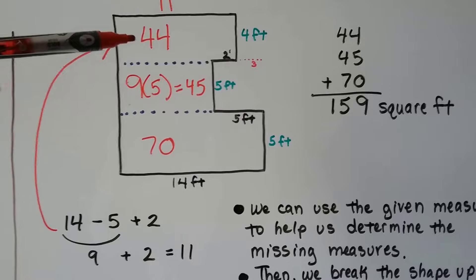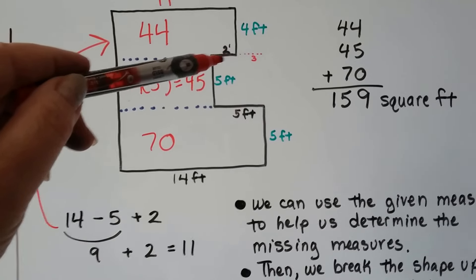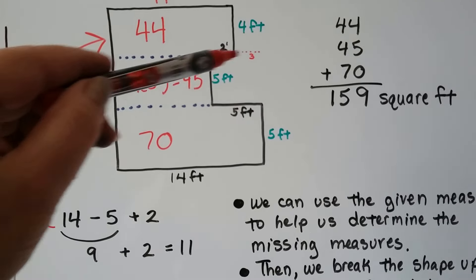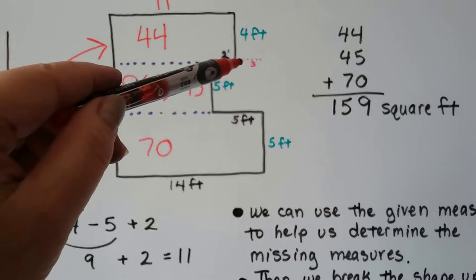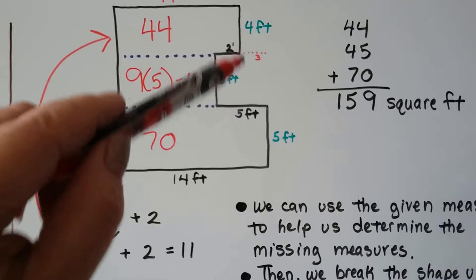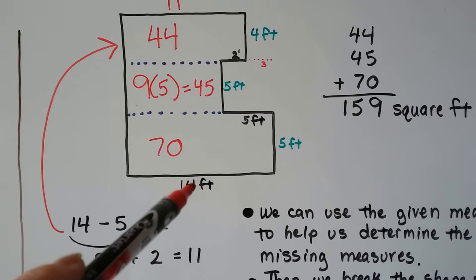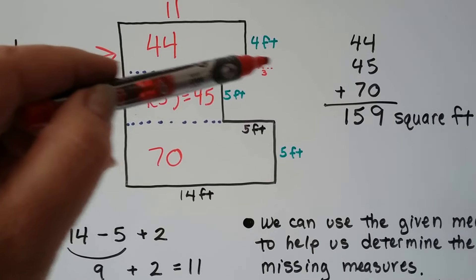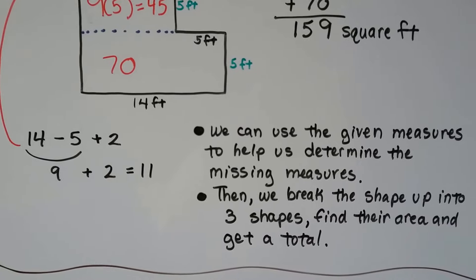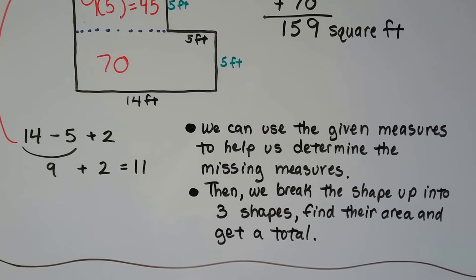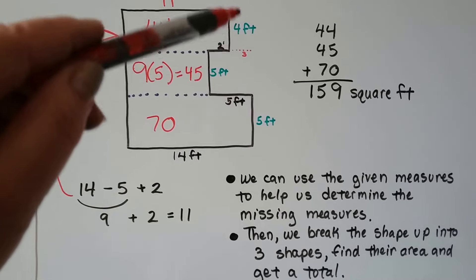To explain this top one more time: we knew the big long bottom is 14 feet, this is 5 feet, and this is 2 feet. The only difference between these two is 3 feet that is missing. So if the difference between the 5 feet and the 2 feet is 3 feet, and this is a big rectangle, then we know the only difference between the 14 feet and this one would be a 3-foot difference — that's how we got the 11. We can use the given measures to help us determine the missing measures.